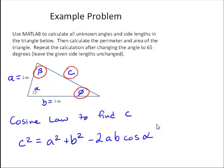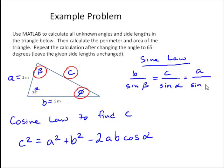And then for beta and phi, we can use the sine law. The sine law tells us that B over the sine of the angle opposite beta is equal to C over the sine of alpha, which is also equal to A over the sine of phi. So, we've got those two pieces of information. We also need to calculate, now we know how to find all of the angles and the side lengths, but now we need to find the area and the perimeter.